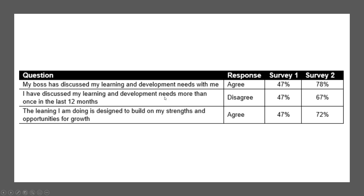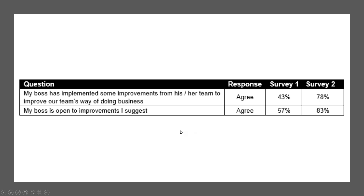The boss has discussed my learning and development needs with me went from 47 to 78. I've discussed my learning and development needs more than once in the last 12 months went from less than 50% to 67%. The learning I'm doing is designed to build my strengths and opportunities for growth went up to 72. My boss has implemented some improvements from his or her team to improve our team's way of doing business went from 43 to 78. My boss is open to improvements I suggest went from 57 to 83 — a great result.